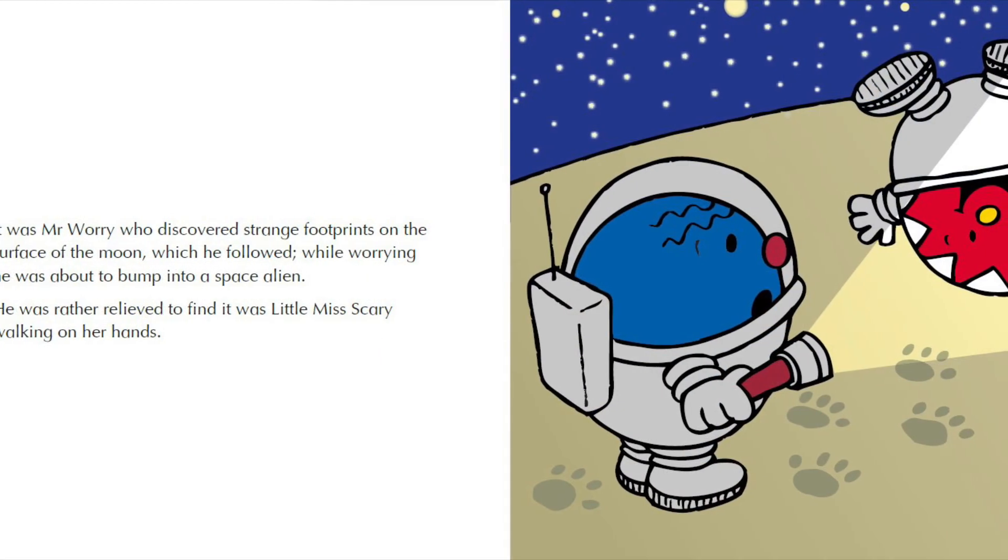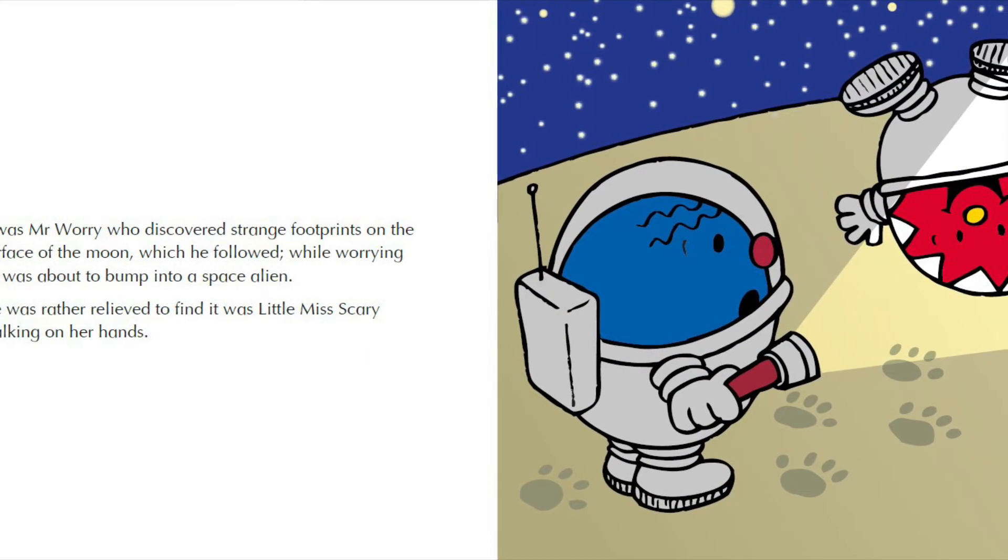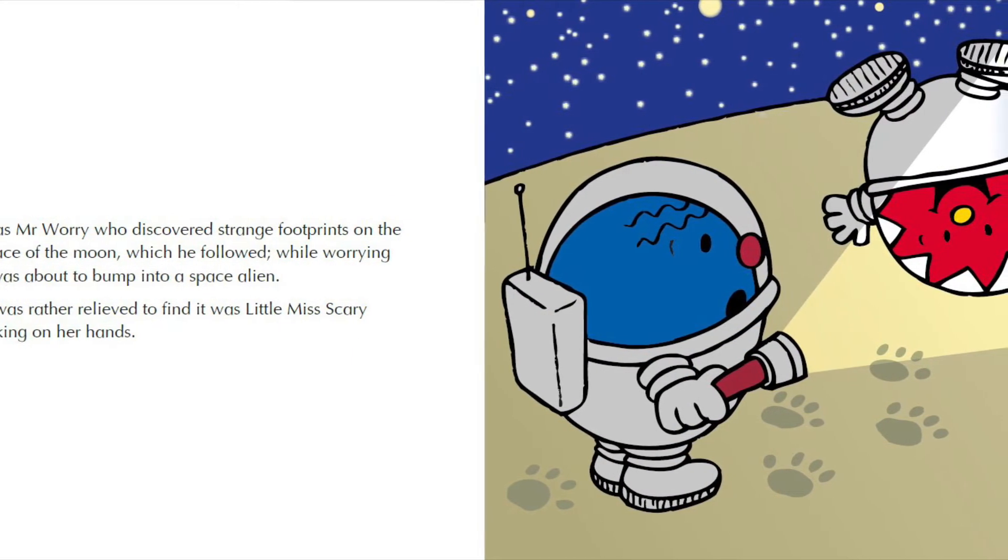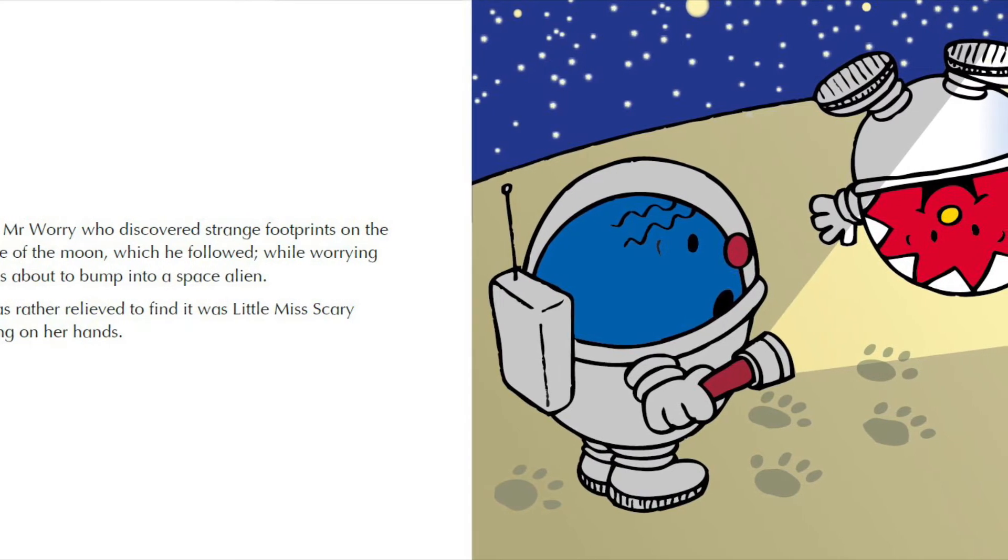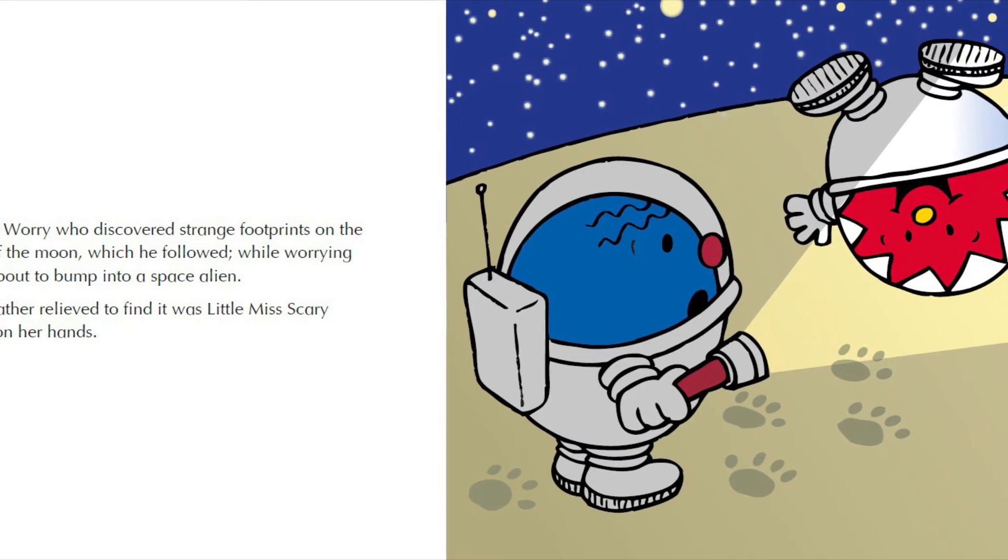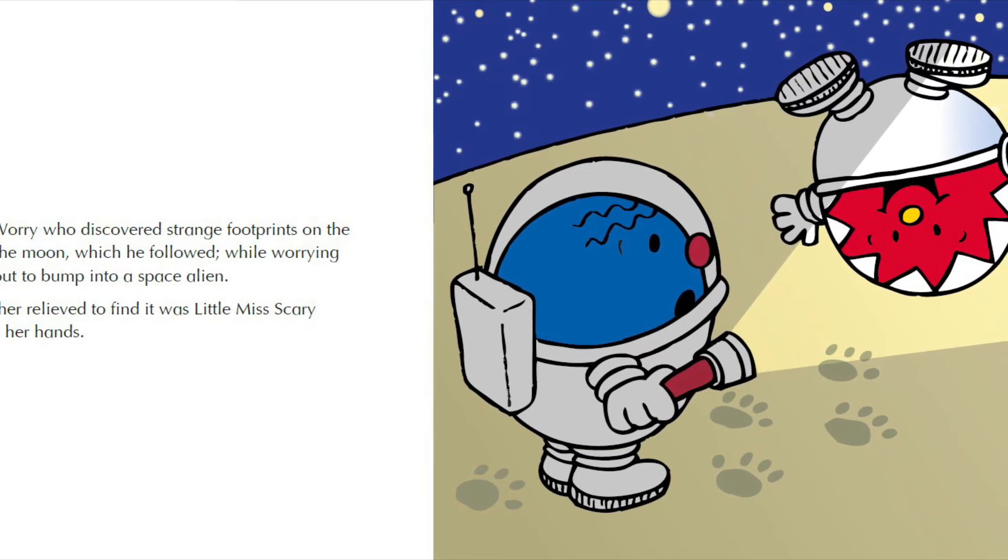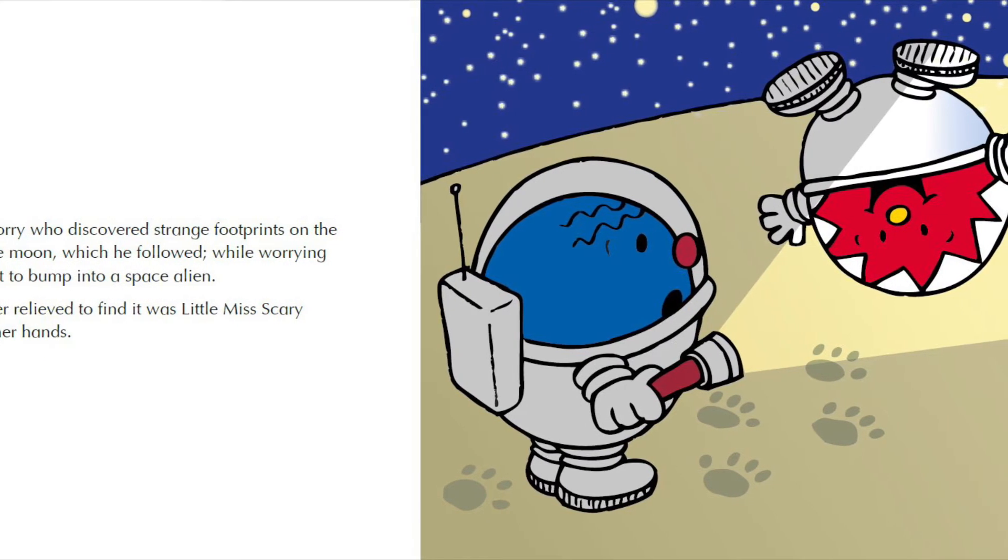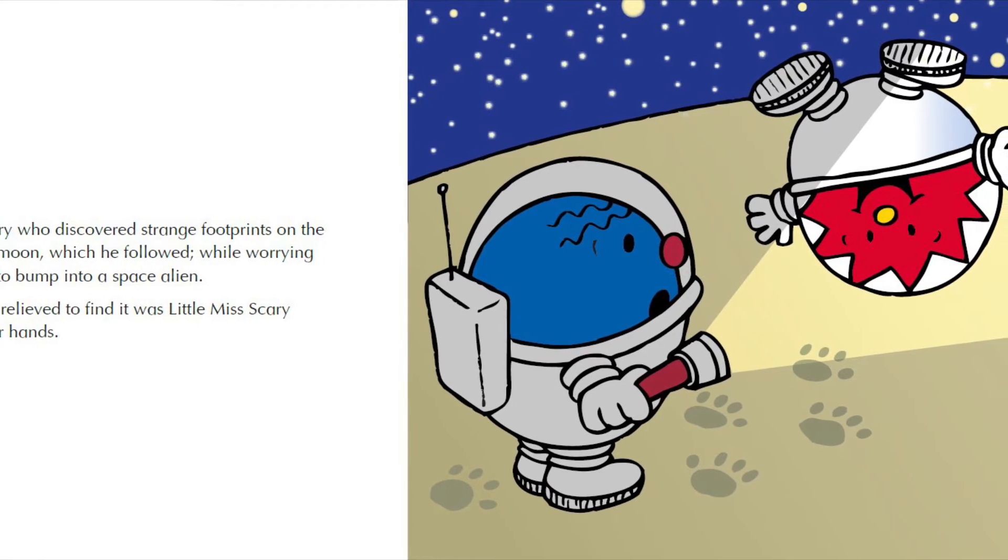It was Mr. Wari who discovered strange footprints on the surface of the moon, which he followed while worrying he was about to bump into a space alien. He was rather relieved to find it was Little Miss Carrie walking on her hands.